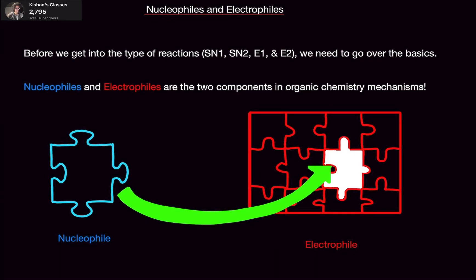Welcome back. In this video we're going to go over nucleophiles and electrophiles. Before we get into the different types of reactions like SN1, SN2, E1, and E2, we need to go over the basics, and those are nucleophiles and electrophiles. In organic chemistry, 90% of the course is all about mechanisms, and nucleophiles and electrophiles are the basics of those mechanisms — they're the two components needed to do mechanisms.